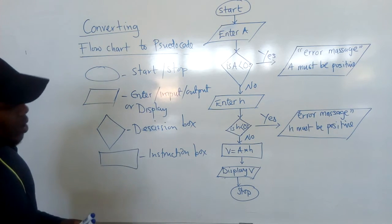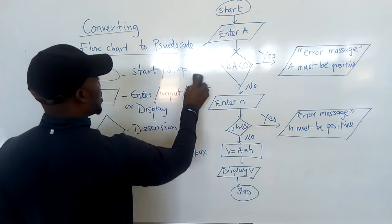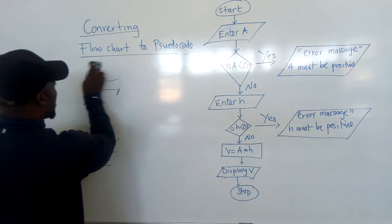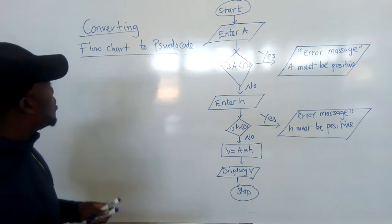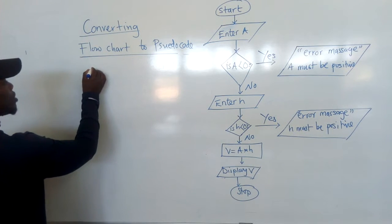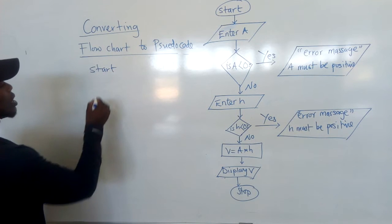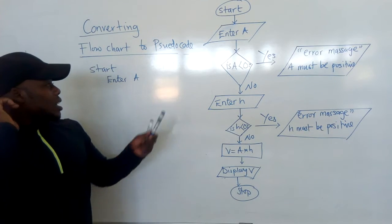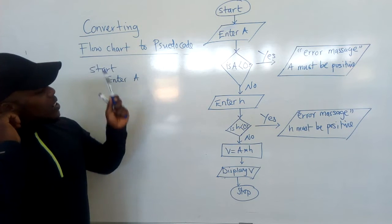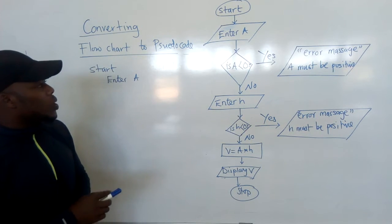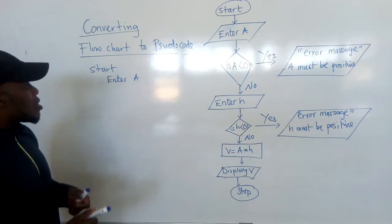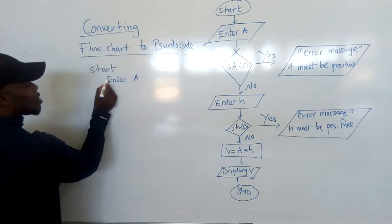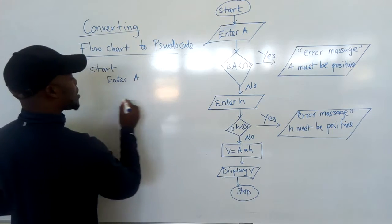So at this point we can now convert, since we know what the shapes mean. It's very easy — it's not possible for somebody not to get a mark on this question. Even if you don't know anything, try to copy what you're able to see here; the markers will give you the mark. So we go to start — we write 'start'. Then we move a little bit in and write 'enter' — you are entering A.